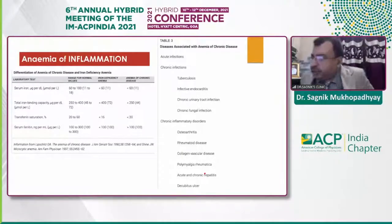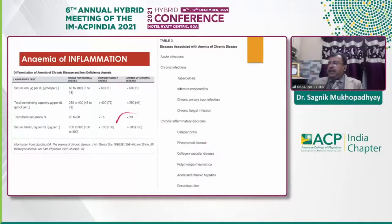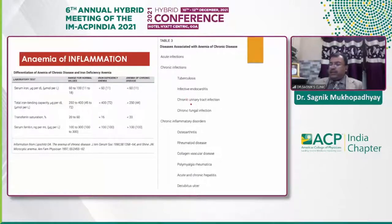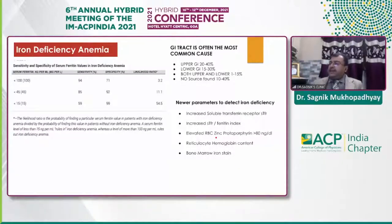Anemia of inflammation is the most common cause. How do we diagnose anemia of inflammation, since it is a specifically confusing entity that must be differentiated from iron deficiency anemia? The cutoff values used in several studies show that if serum ferritin is more than 100, it usually signifies anemia of inflammation. Other parameters include TIBC, serum iron, and transferrin saturation. Anemias of inflammation are due to slow-growing chronic infections like tuberculosis, infective endocarditis, UTIs, fungal infections, or rheumatological conditions like osteoarthritis, rheumatoid arthritis, collagen vascular disease, or PMDM.